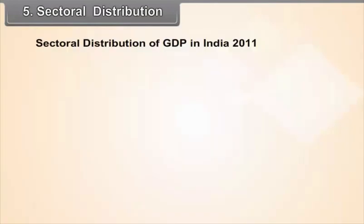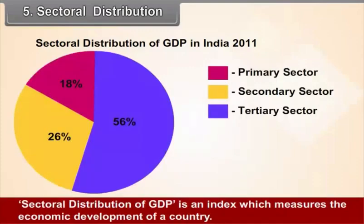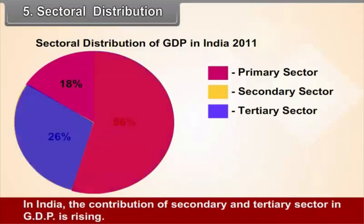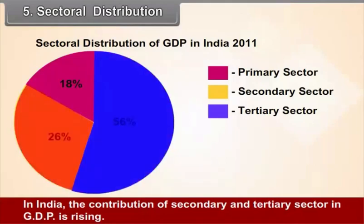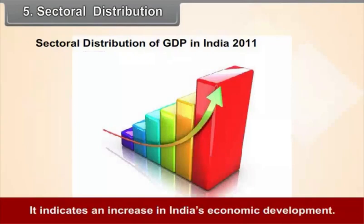Sectoral distribution of GDP in India (2011). Sectoral distribution of GDP is an index which measures the economic development of a country. In India, the contribution of the secondary and tertiary sector in GDP is rising, indicating an increase in India's economic development.